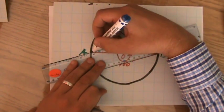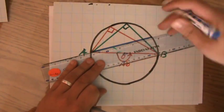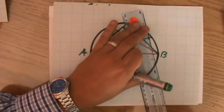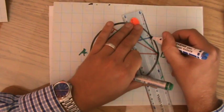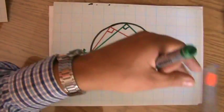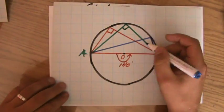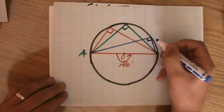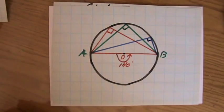doesn't matter where they meet on the circumference, it will always be a right-angle triangle that you create. Because that angle at the circumference is half the angle there. Half of 180 is 90 degrees. Right-angle triangle. Good.